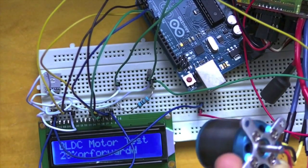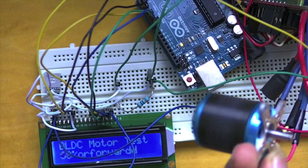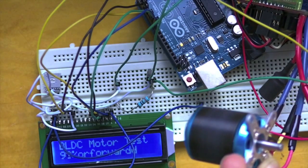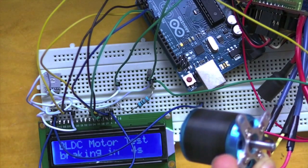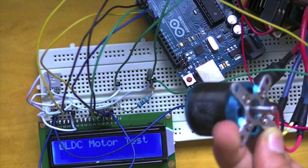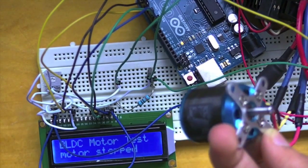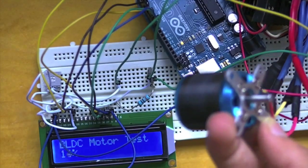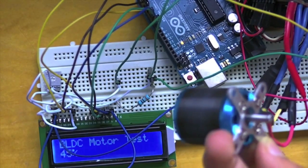And then it keeps on looping. So there you have it. That's how to control a brushless DC motor with an Arduino.